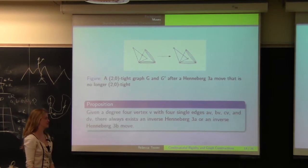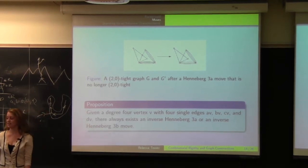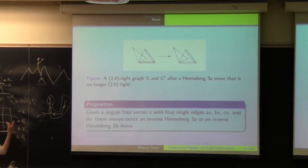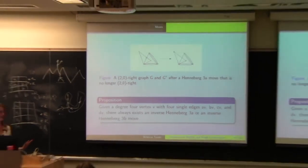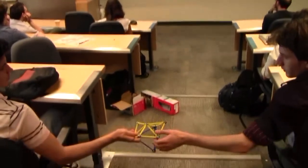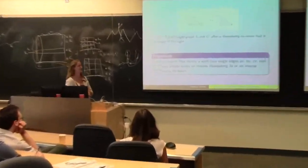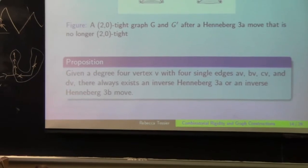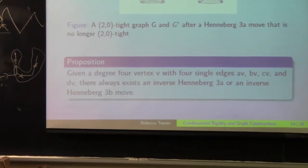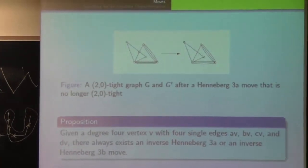However, one of the really interesting propositions that I looked at this summer is that given a degree 4 vertex of that type, with four single edges attaching to four distinct vertices, there always exists an inverse Henneberg 3a move or an inverse Henneberg 3b. So it's a really nice result because these show up a lot in 2-0-tight graphs, because you can have a 4-regular graph, it's a really useful move to have, and so that's one of the more interesting things.